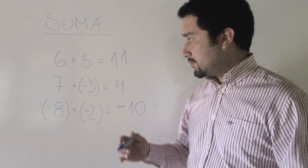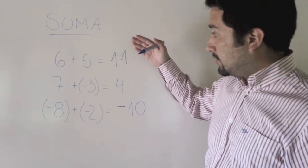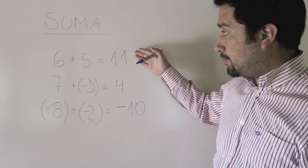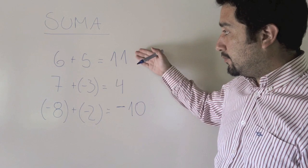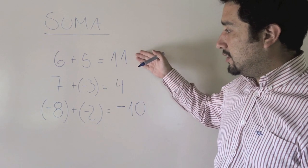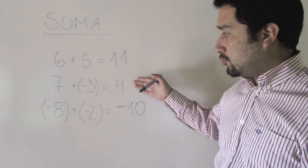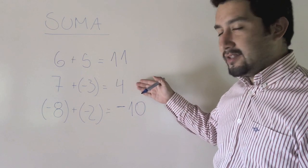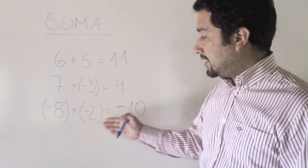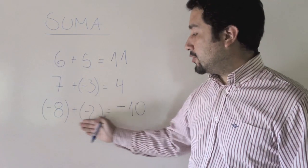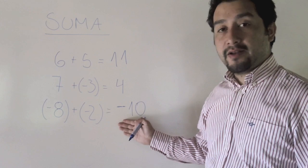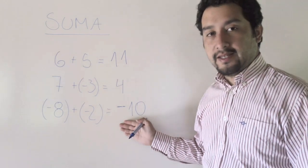Entonces: la suma de dos números positivos da un positivo, la suma de signos distintos depende del signo del mayor, y la suma de dos números negativos siempre me va a dar un negativo.